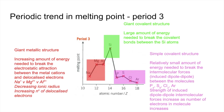Moving on to the simple covalent structures, a relatively small amount of energy is needed to break the induced dipole-dipole intermolecular forces. There is more variation in molecular formulae here: phosphorus exists as P₄, sulfur as S₈, chlorine is the diatomic Cl₂, and argon, like neon, exists as single atoms. Sulfur shows a slight rise in melting point because it has stronger induced dipole-dipole forces. The strength of induced dipole-dipole forces increases as the number of electrons in the molecule increases.